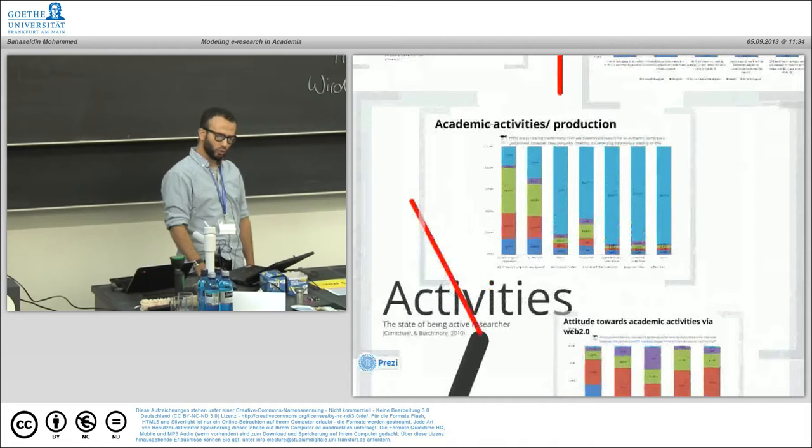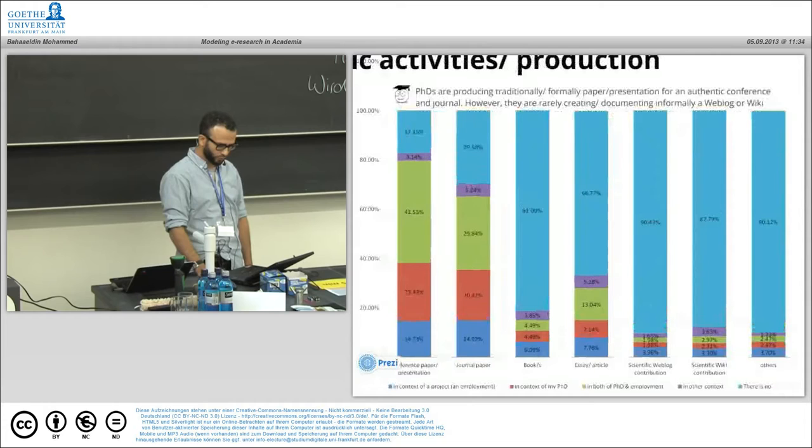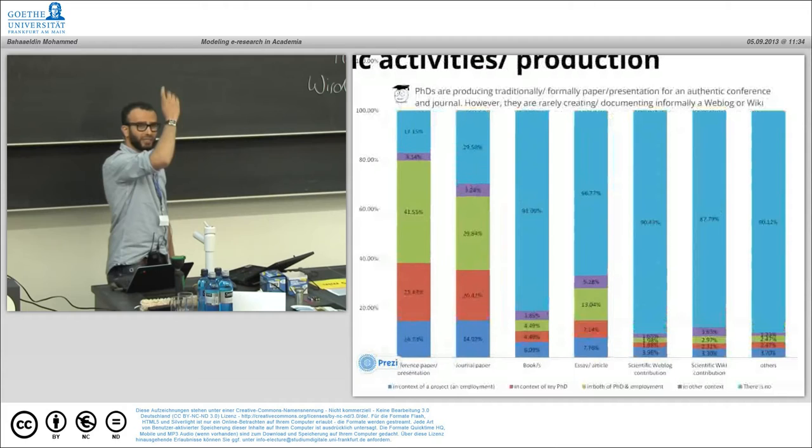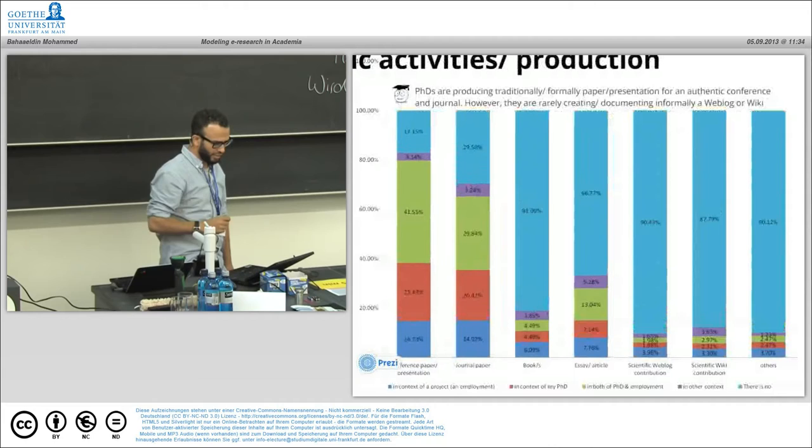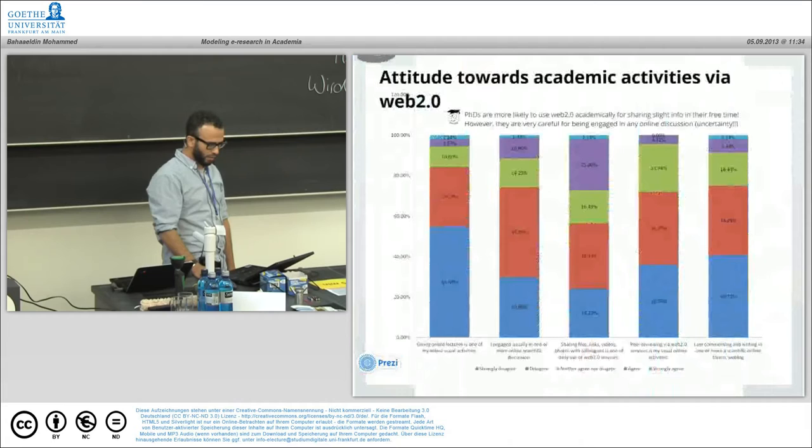Let us go through activities in everyday life. I wrote up the conclusion for you: PhDs are producing traditionally formal papers and presentations for authentic conferences and journals. However, they are rarely creating documents informally for weblogs and wikis. They go formal but don't go informal to market their research through weblogs. They don't follow such cases.